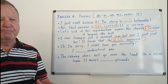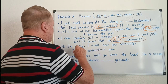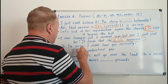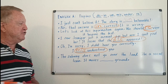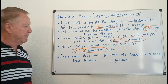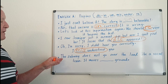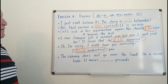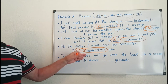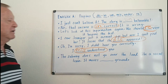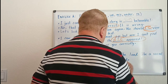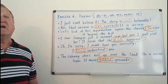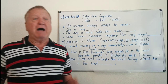Sentence five: 'Oh, I'm sorry, I didn't hear you correctly — I ___ understood.' The answer is 'mis' — 'misunderstood.' I misunderstood you. Sentence six: 'The subway does not go over the land like a normal train — it moves underground.' The prefix here is 'under,' and the answer is 'underground.'